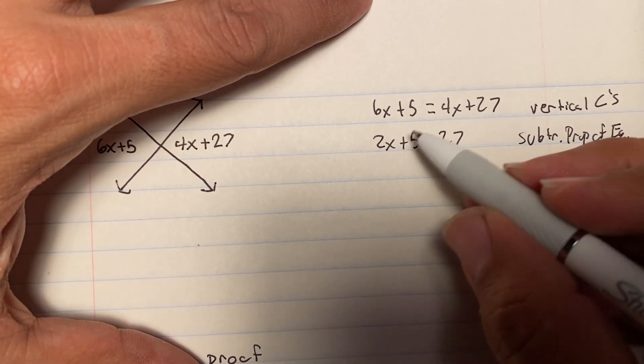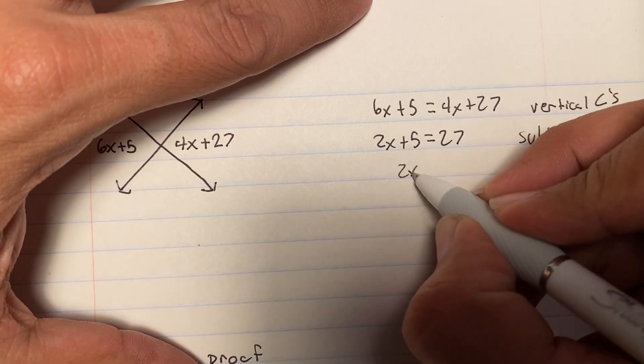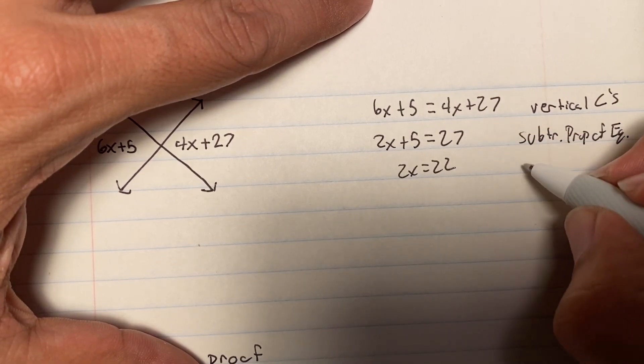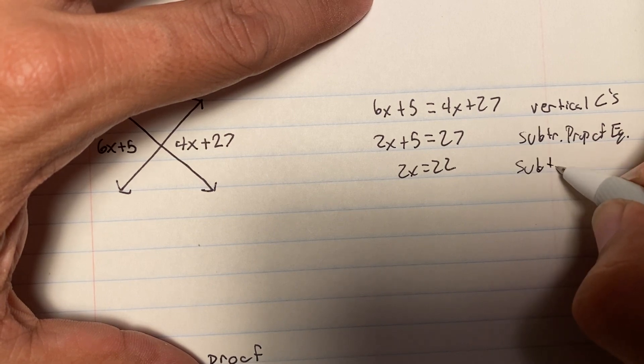Alright, then the next line, I'm going to say 2x equals 22. That's also going to be the subtraction property of equality.